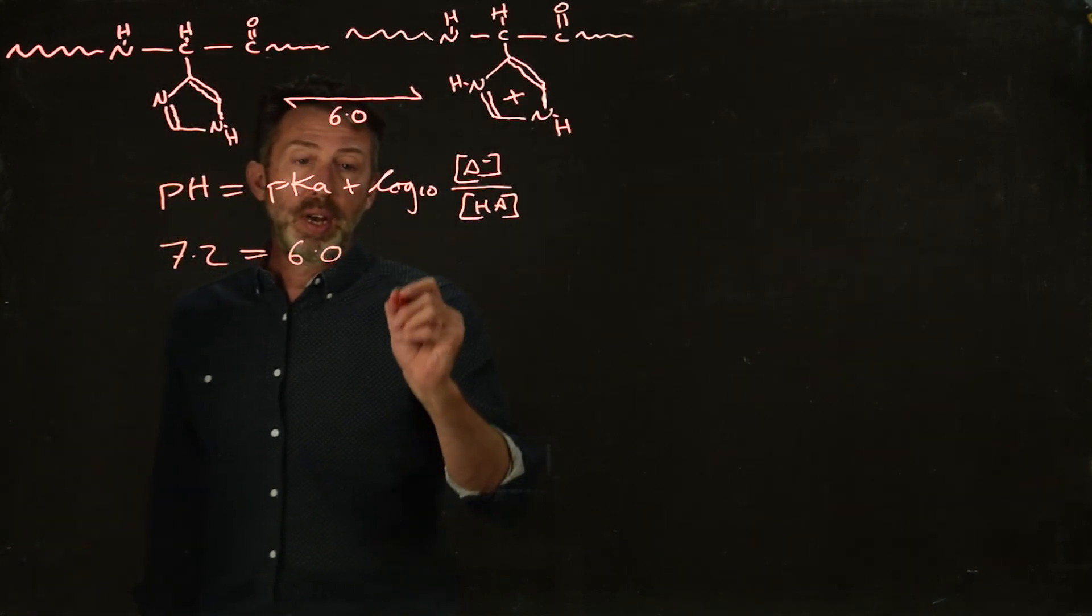So if the pH is 7.2, well the pKa is 6.0, and that's equal to the log 10 of this ratio, A minus divided by HA.